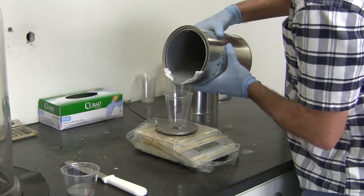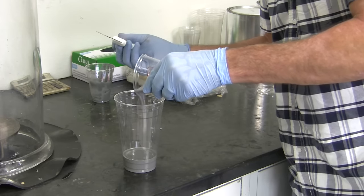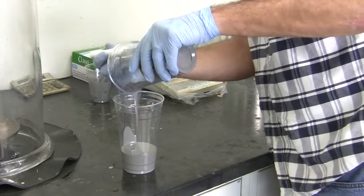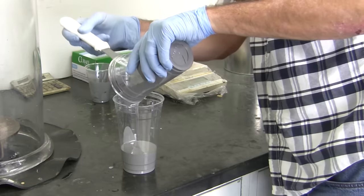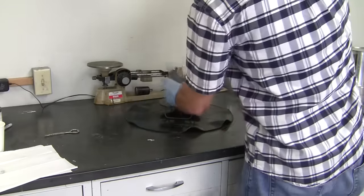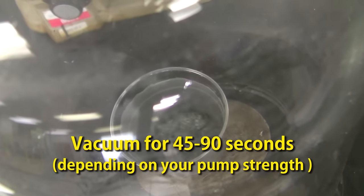TC814 has an easy one-to-one mix ratio, and once the A and B components are measured out, we can begin to mix thoroughly with our mixing spatula. Once again, to ensure a proper mix, we use the double-cup mix method to prevent any unmixed material from ending up in our cured part. To minimize air bubble entrapment, we pull a vacuum on the mixed polyurethane to extract air bubbles.